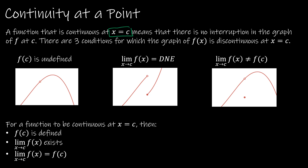That means there's no interruption in the graph of f at c. The first way a function can be discontinuous at x equals c is if f of c is undefined. Even though the limit would exist because the function approaches the same value from the left and from the right, the function itself is undefined at c — we've got a hole in the graph at c.